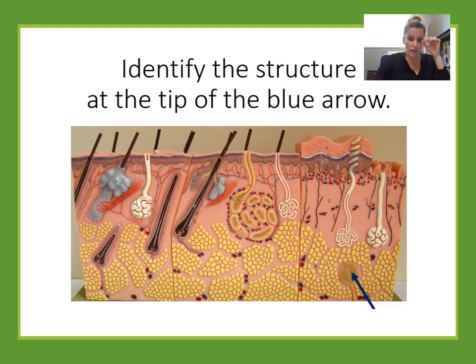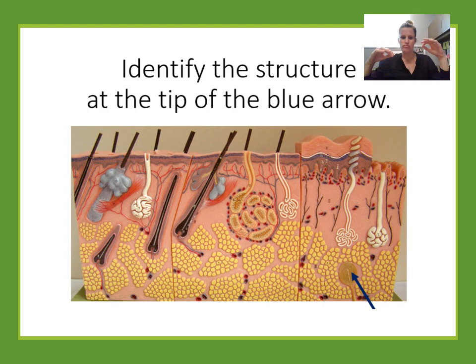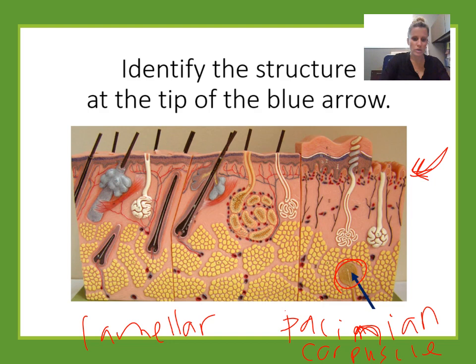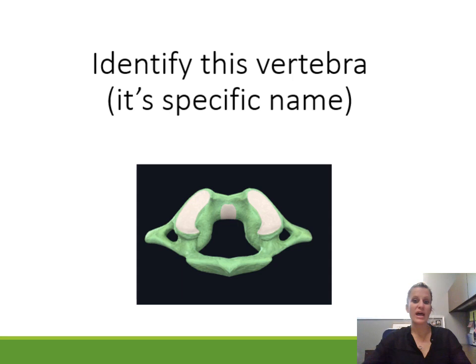Identify the structure at the tip of the blue arrow. This is another sensory receptor present in the skin — a larger receptor located deep in the dermis, even toward the hypodermis. The small superficial receptors were the tactile corpuscles for light touch. This larger deep receptor is a Pacinian corpuscle, also called a lamellar corpuscle. These give information on deep touch and pressure.